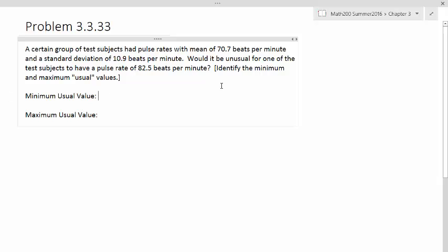So the minimum and maximum usual values are usually bounded by those numbers that are within two standard deviations of the mean. So if we're looking at a minimum usual value, we should be looking at this as 70.7 minus 10.9 times 2. So the formula goes something like this. We got X bar minus 2 times the standard deviation S. So that's actually 70.7 minus 2 times 10.9.